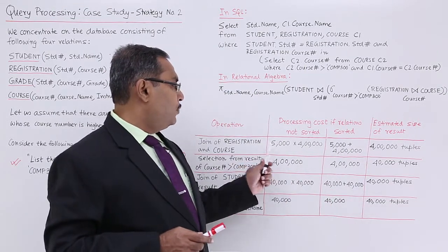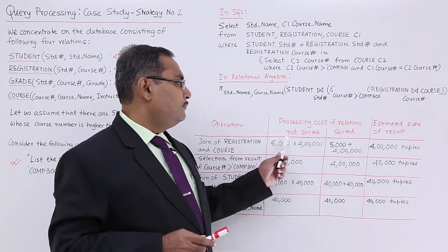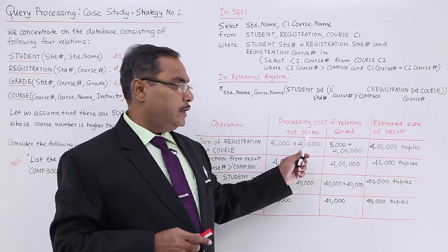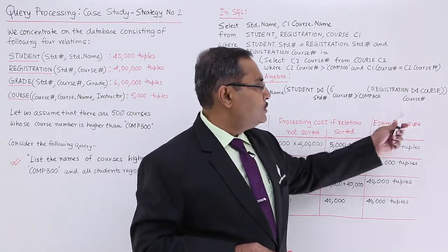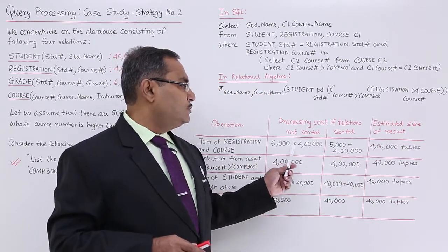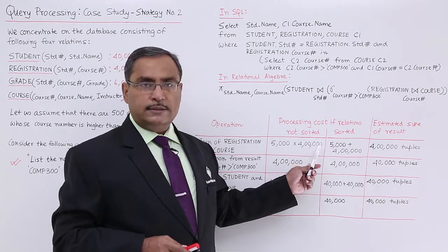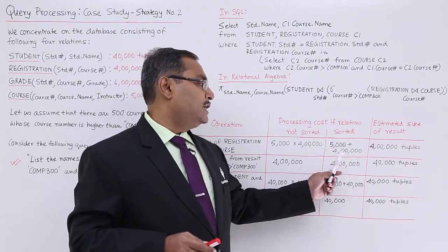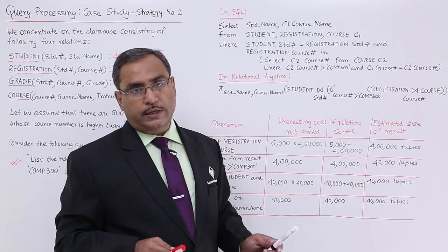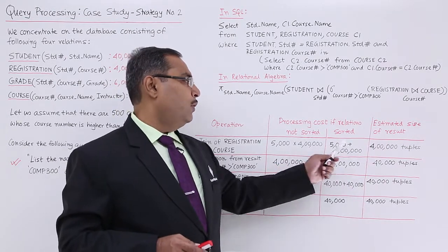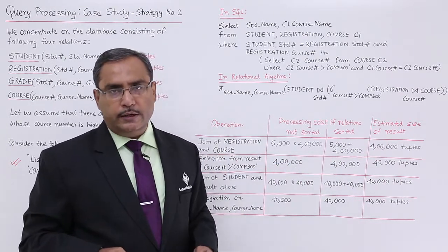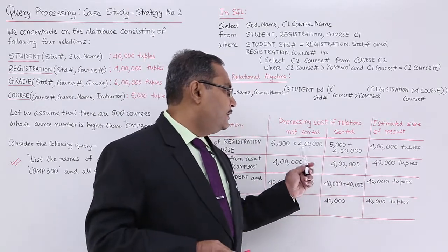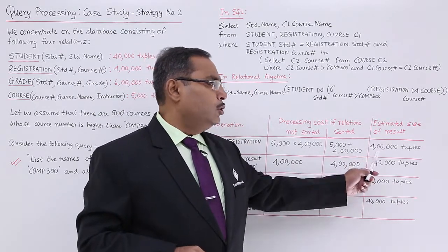For the natural join, if the tuples are not sorted on the course number, then we will have 5,000 into 400,000 comparisons. If they are sorted on the course number, then 5,000 plus 400,000. Why it is multiplication versus addition was discussed in the earlier video — please watch that. The resultant tuple count will be 400,000, since in a natural join the maximum number of tuples produced is the maximum of the two input relations.